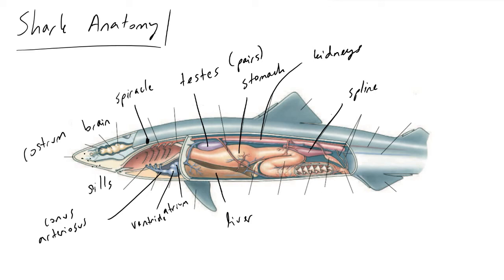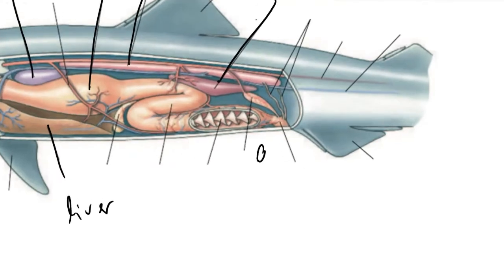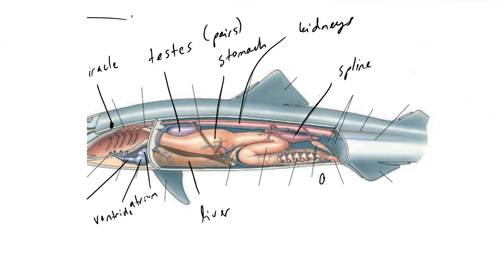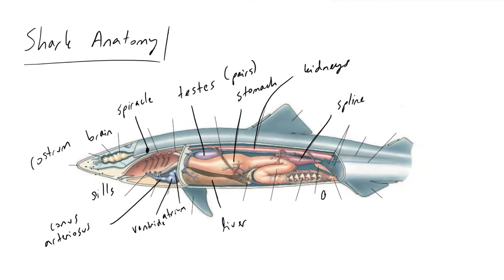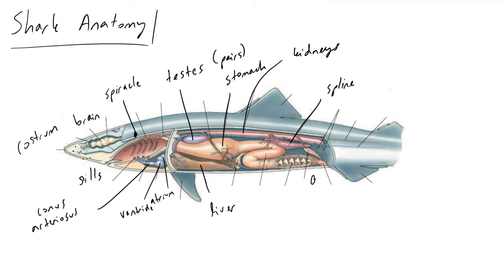One of the interesting things with sharks is that there is a valve between the stomach and the small intestine, which is called the pyloric valve. Its job is pretty intuitive — it pinches off and opens up depending on the presence of food. The very entrance of the small intestine in sharks is called the duodenum.